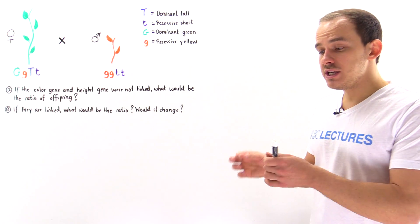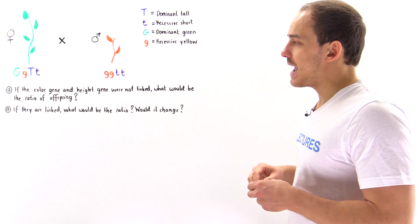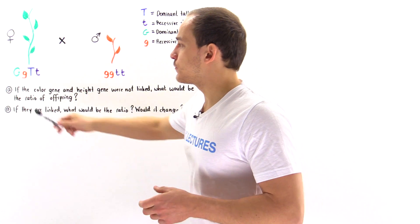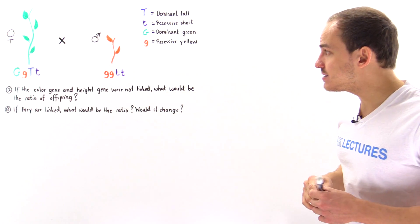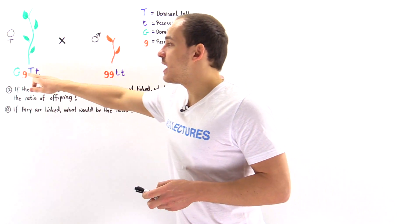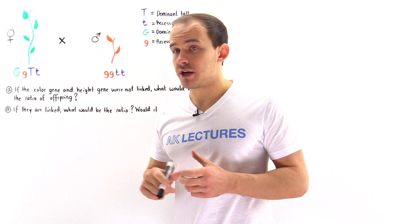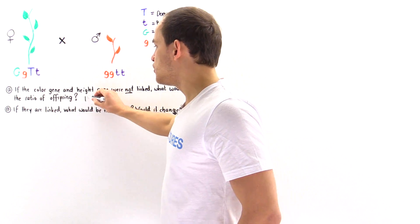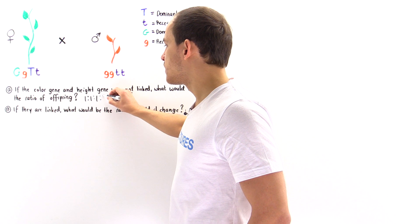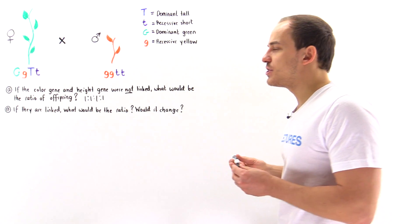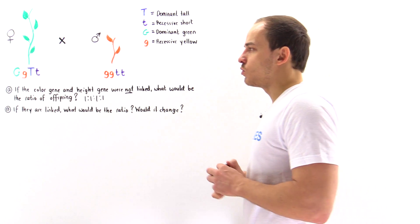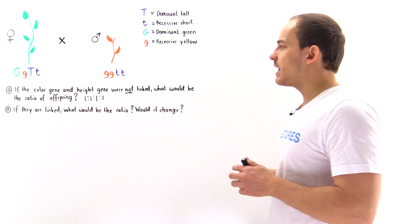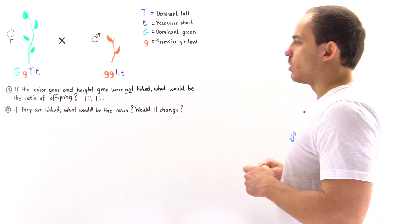In our previous discussion, we focused on genes that are not linked, so we basically answered question A. We saw that if we mate two plants — one having a heterozygous genotype for two traits and the other having a homozygous recessive genotype for two traits — and if the height gene is not linked with the color gene, then we always produce a ratio equal to 1 to 1 to 1 to 1. So if we mate these two individuals 1,000 times, 250 offspring will have each of the four genotypes.